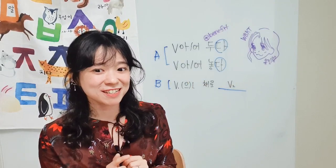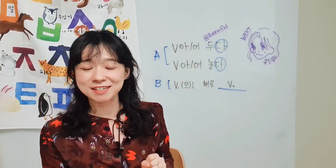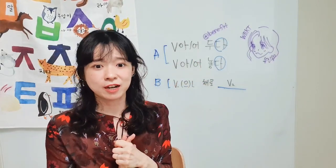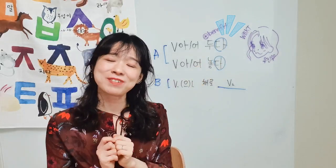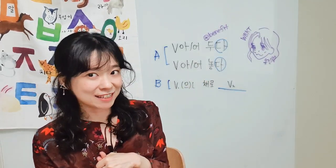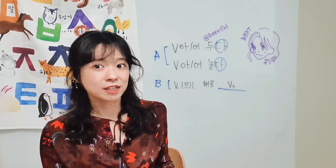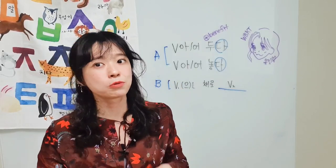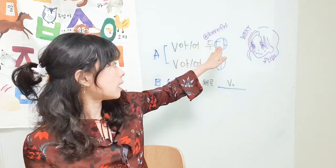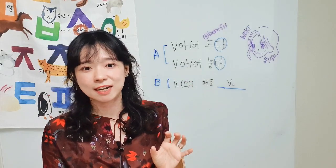Some of you may already sense the differences from their grammatical form. What's the difference you can sense from the grammatical form? 아/어 두다 and 아/어 놓다 — they are finished with 다, which means it's a final ending, while 은채로 is a connective ending. When you finish a sentence, you use 다, right? So when you memorize verbs and adjectives, the original form finishes with 다 — like 예쁘다, 가다, 오다, 먹다. Like this — 두다, 놓다. These two are final endings.